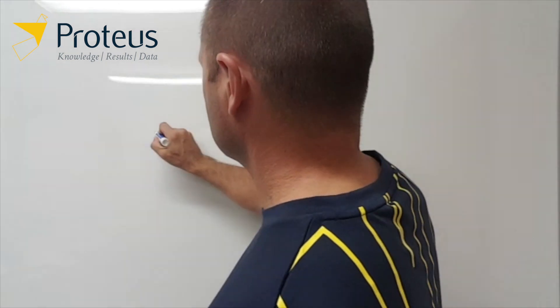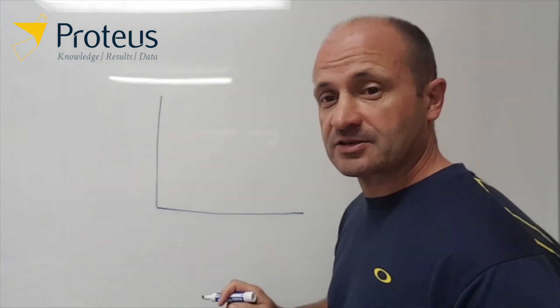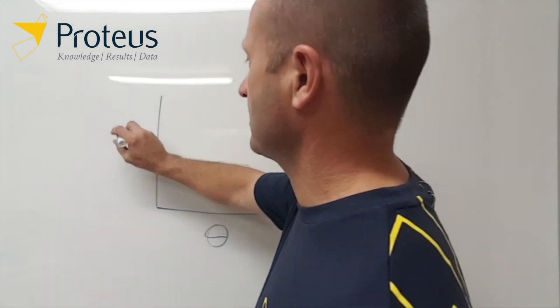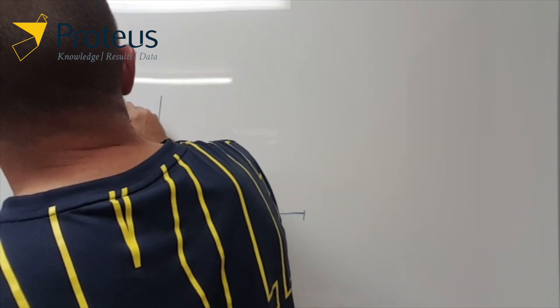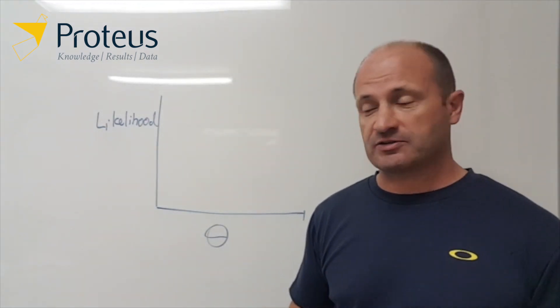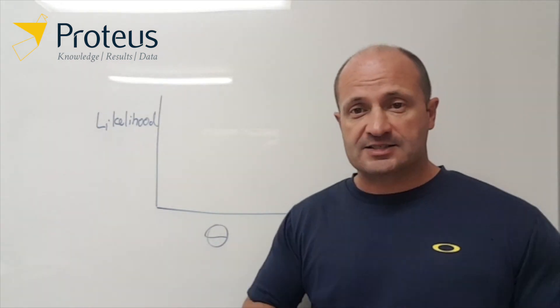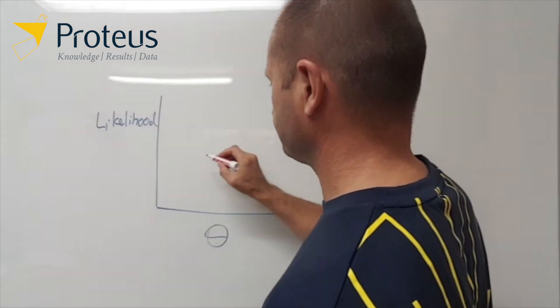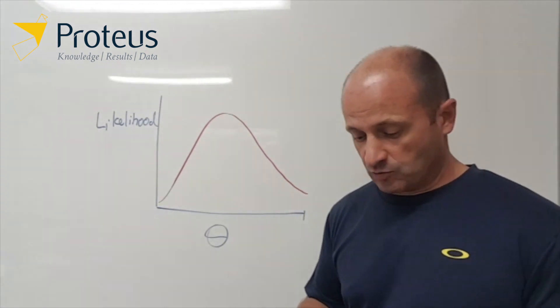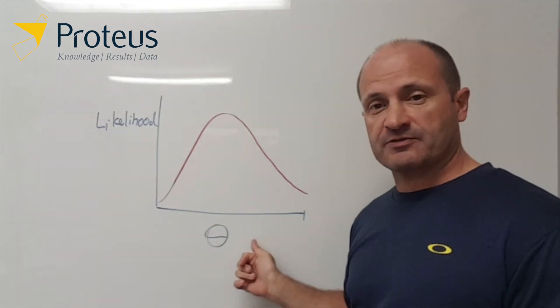If we take a fairly simple example — suppose we've got just one parameter we're trying to estimate using maximum likelihood — that defines a function. If I just do a quick sketch: we have our parameter of interest on the x-axis, I'll call it theta, and on the y-axis we have our likelihood. It's just an equation that we put values into for theta, and the likelihood function will be a smooth continuous function that might look something like a curve.